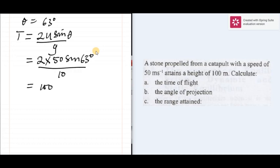As 100 sin 63 degrees is 0.8910 all over 10. This expression will give us the time of flight as 8.9 seconds.